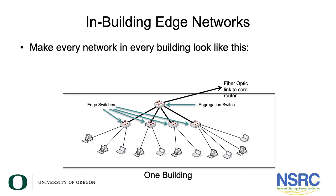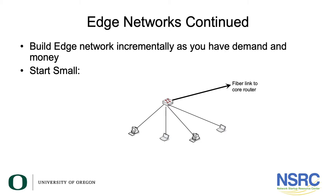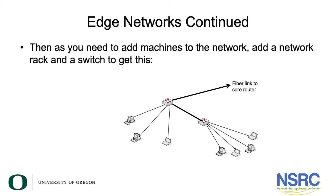Now we recognize that it might not be possible to afford to build out your network in that fashion, so we can take an incremental approach. We can run fiber to the core and place one switch inside of a building and serve all the computers off of that one switch. And as we get additional funding, we can place a second switch — maybe on a different wing of the building or on a separate floor — and from that switch we will serve all the computers that can be served from there.